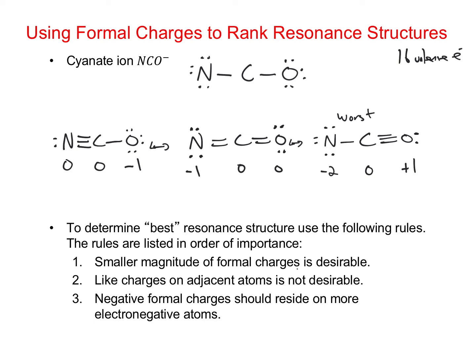Rule 1 doesn't allow me to distinguish between the first and middle structures because they both have the same magnitude of formal charges. Rule 2 — having like charges on adjacent atoms is not desirable — also doesn't differentiate them, since they each have only one non-zero formal charge. So I go to rule 3: negative formal charges should reside on more electronegative atoms. In the left structure, oxygen has the negative charge; in the middle, nitrogen has it. Oxygen being more electronegative than nitrogen means the left structure is the best resonance structure for the cyanate ion.